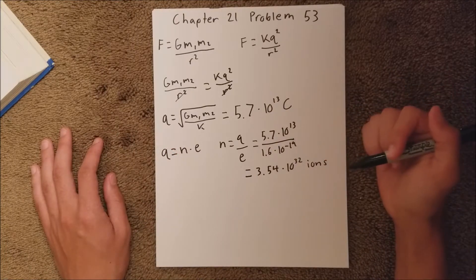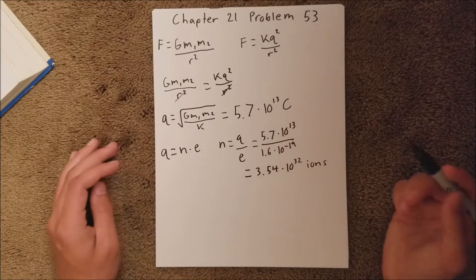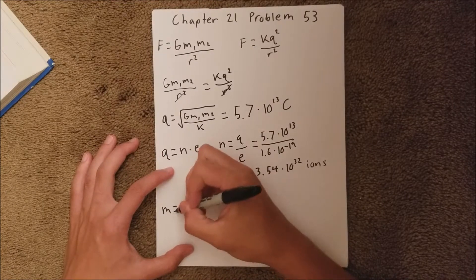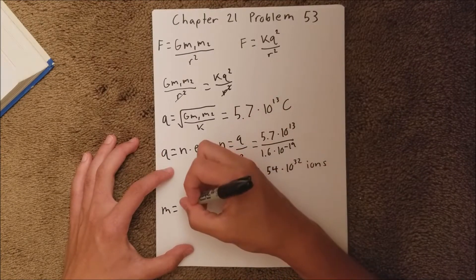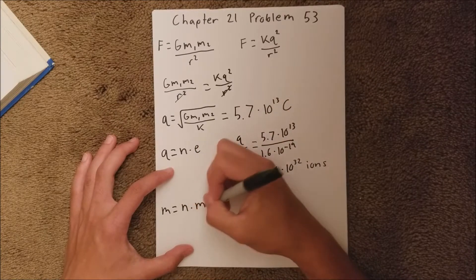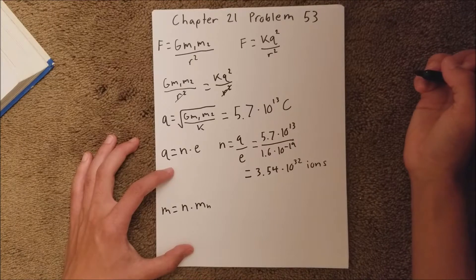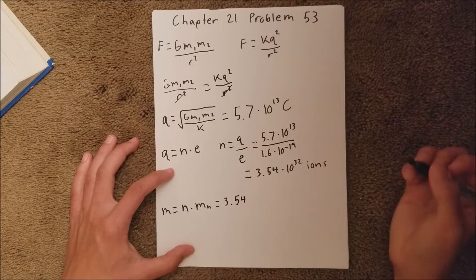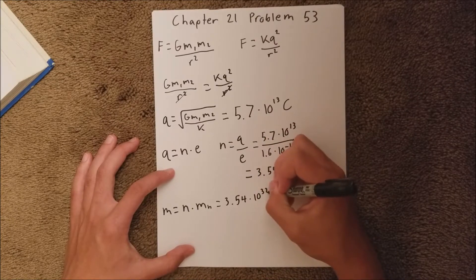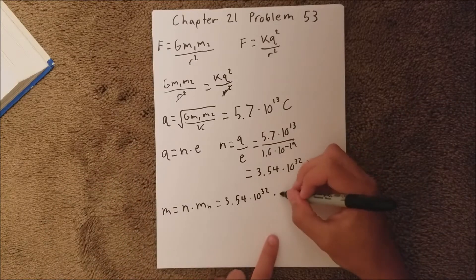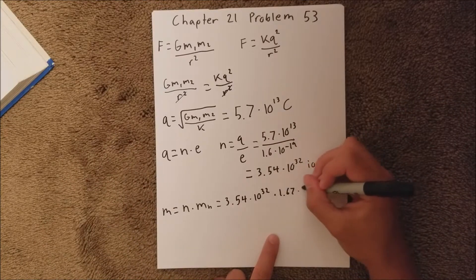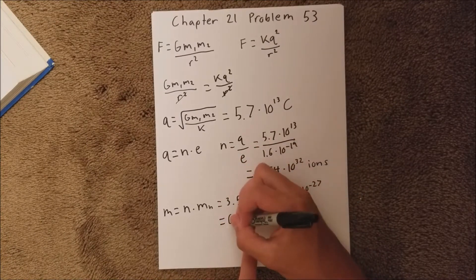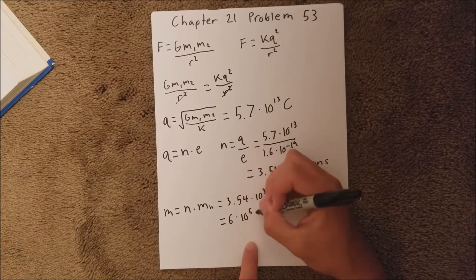But we need to find the mass of that if it were hydrogen. So our mass is going to be this number here, our n, times the mass of hydrogen. That is our n, the number of protons or number of ions, either or. Times the mass of hydrogen, which is 1.67 times 10 to the negative 27th. And when you put that in your calculator, you should get 6 times 10 to the 5th kilograms.